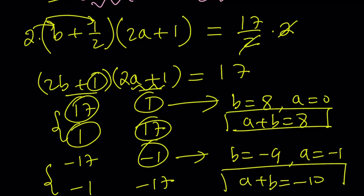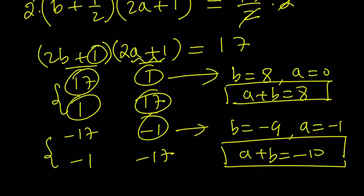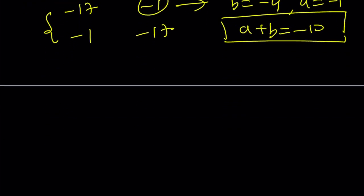So we have two values for a plus b, and those values are 8 and negative 10. Again, if you use the other pair, it won't make a difference. All right? So let's go ahead and take a look at an alternative way to solve this problem real quick, and then we'll finish up.